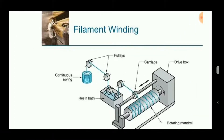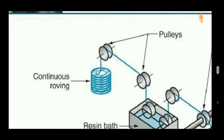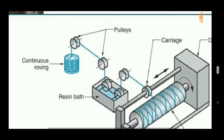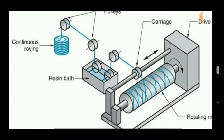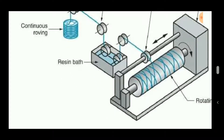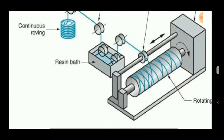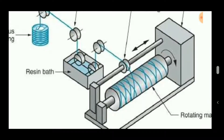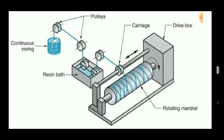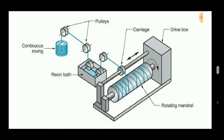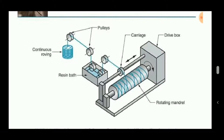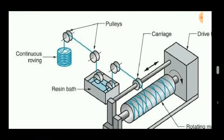This is the simple diagram of the filament winding process: continuous roving is fitted over a pulley connected to a resin bath, where the filament passes through. A tensioner tensions the filament wound along the cylindrical barrel. A motor connected to one side of the center rotates the barrel, and filaments are continuously moved over the cylindrical barrel through the resin bath.